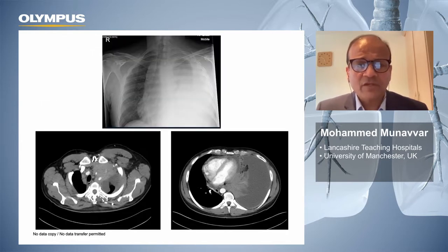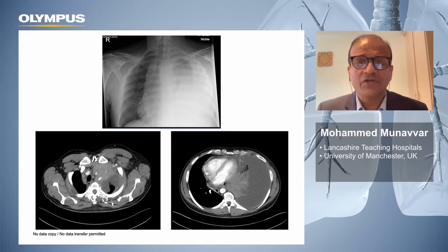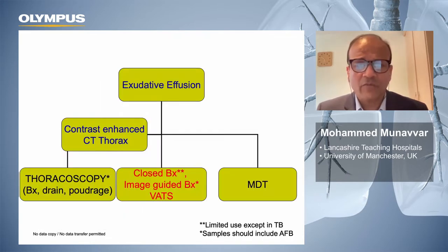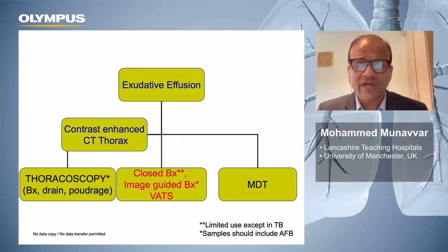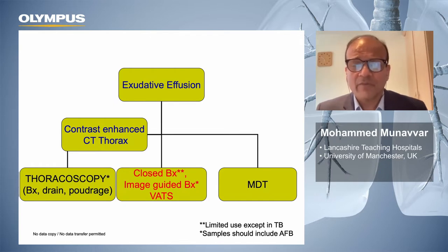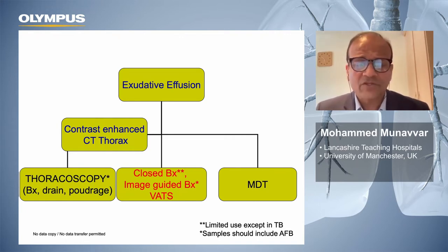Thoracoscopy is an essential investigation in this very common scenario when a patient presents with an undiagnosed unilateral pleural effusion. This is a massive pleural effusion with mediastinal shift, and the best way forward would be to perform a thoracoscopy. First, we confirm this is an exudative effusion. We would have carried out a contrast-enhanced CT scan. Then you have options: a closed pleural biopsy with lower diagnostic yield, image-guided pleural biopsy, or thoracoscopy. The advantage of thoracoscopy is that you can perform biopsies, place a chest drain, and also complete thoracoscopic pleurodesis in the same sitting.